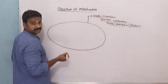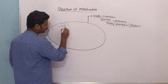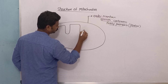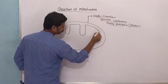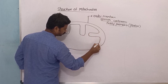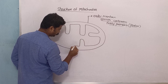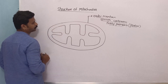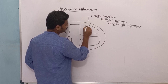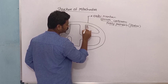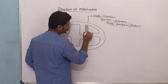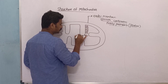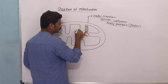The inner membrane of mitochondria is rough and it is thrown into many finger-like projections called cristae. These finger-like projections are called cristae. The inner membrane is rough due to the presence of stalk particles called oxysomes or F0F1 particles, also known as subunits of Fernandez.